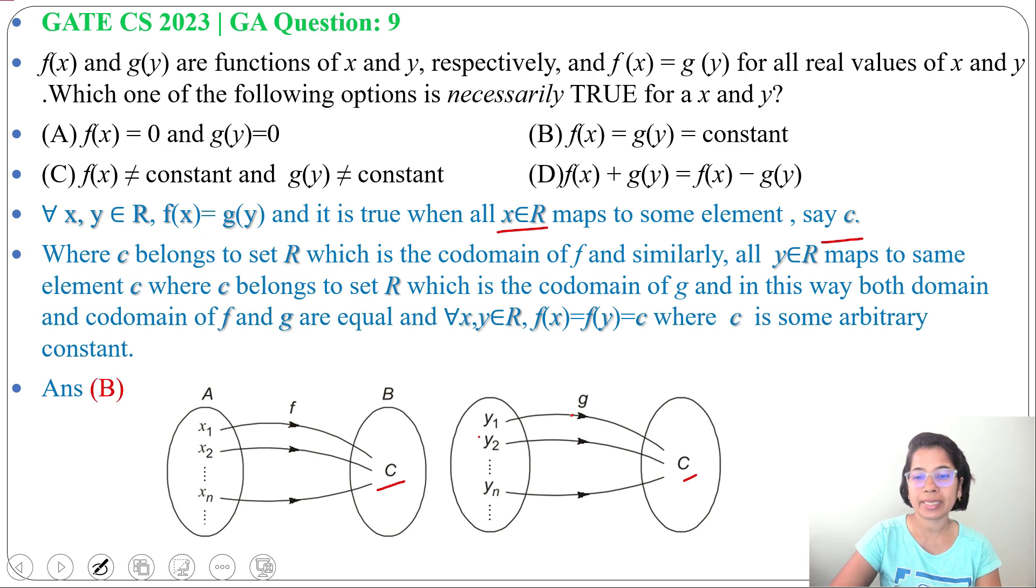So f(x) equals g(y) equals c, f(x) equals c and g(y) is also c. So it means some constant. Then we can say f(x) equals g(y). So here c belongs to set of R, R is the real number which is the codomain of f. Here you can mark c is the codomain, here x are domain and c is the codomain.